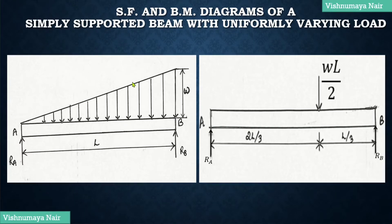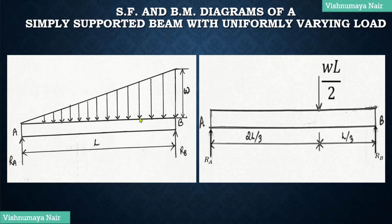These uniformly varying loads are also known as triangular loads. This point load will be equal to the area of this triangle. The area of this triangle will be equal to half times L times w, which is equal to wL/2, and the point load will be acting at the CG of the triangle. The CG of this triangle will be at a distance of L/3 from the right end and 2L/3 from the left end. So this equivalent point load wL/2 will be acting at a distance of 2L/3 from end A and L/3 from end B.